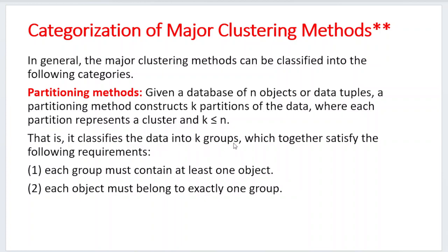The data is classified into k number of groups. If k equals one, you get one cluster; if k equals two, you get two clusters. There are two requirements: each group must contain at least one object, and each object must belong to exactly one group. These are the constraints while doing the clustering process.